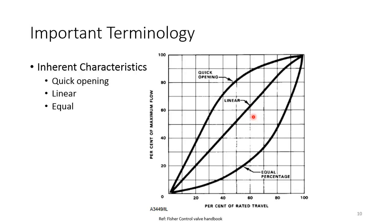A valve will have mostly three inherent characteristics: quick opening, linear, and equal percentage. On the chart, the x-axis is percentage of rated travel and the y-axis is percentage of maximum flow. In quick opening, when the valve opens 40%, the flow is already 70%; at 80% open it is nearly 100%. In linear, the relationship is direct: 20% open gives 20% flow, 40% gives 40%, 60% gives 60%, and so on.